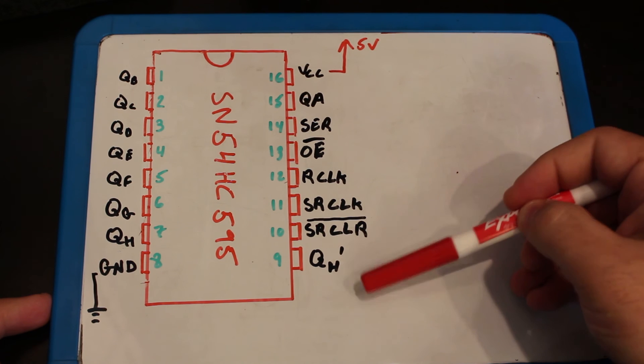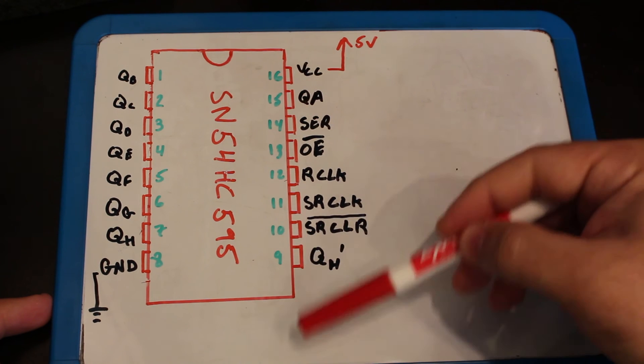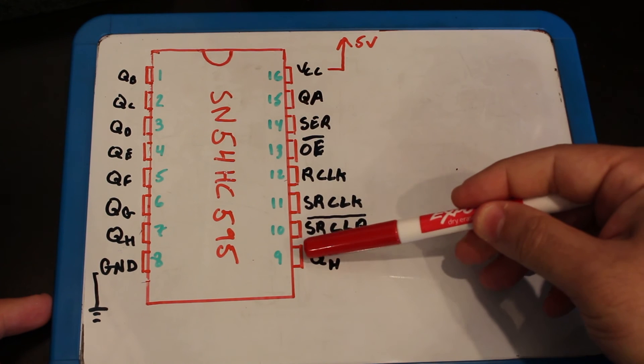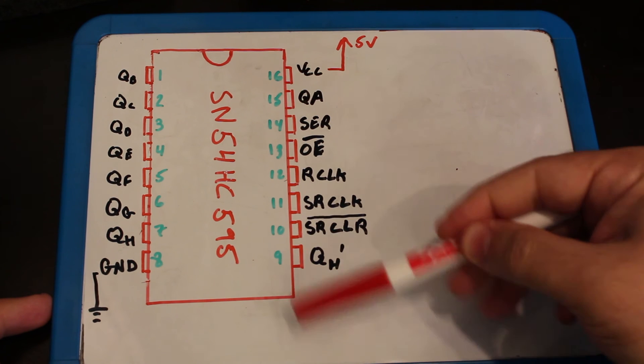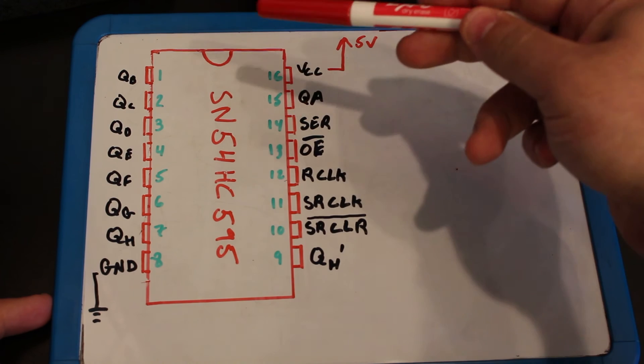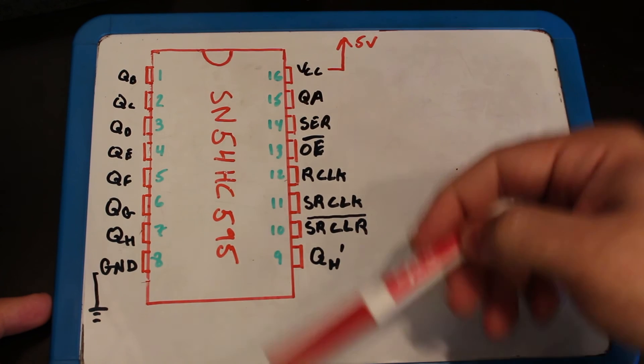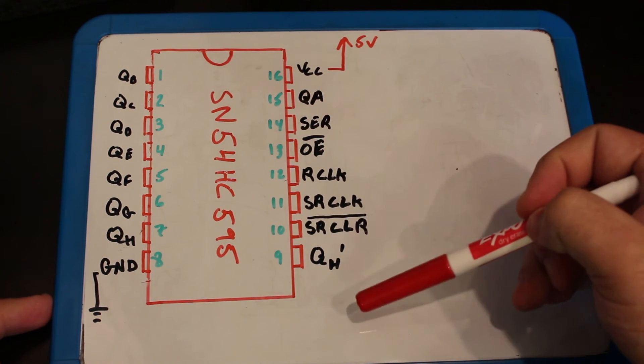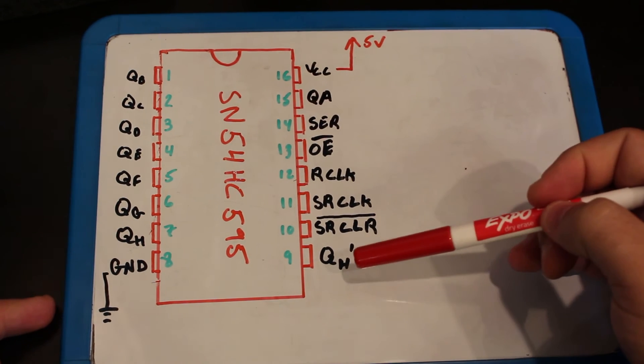The QH tick, you can actually connect multiple registers and the output from this will be the input for the next one. It's nice because you can actually add another one and have suddenly 16 outputs with just a few pins.